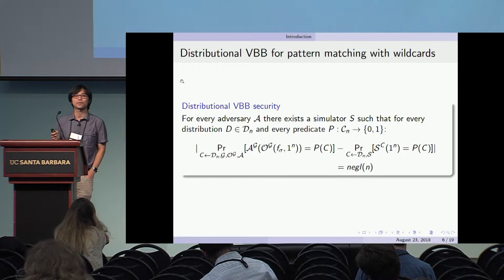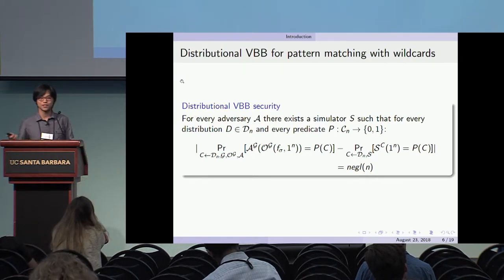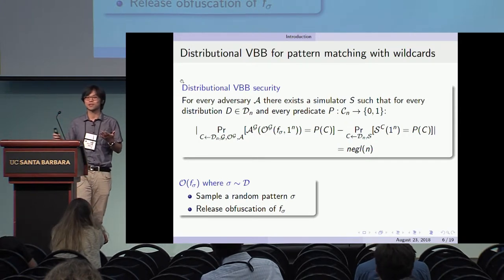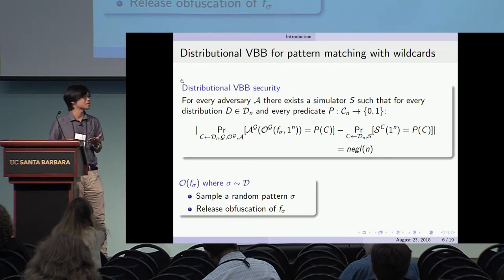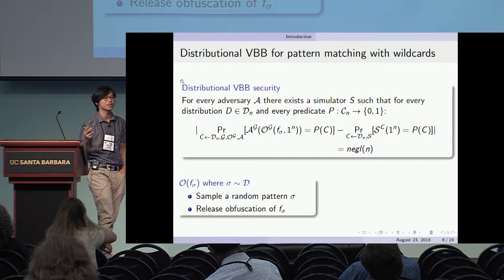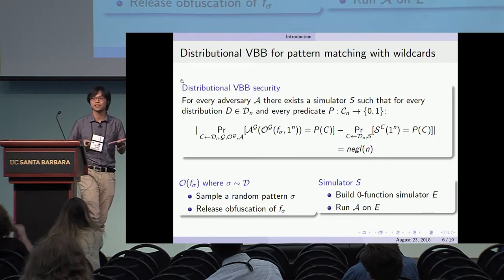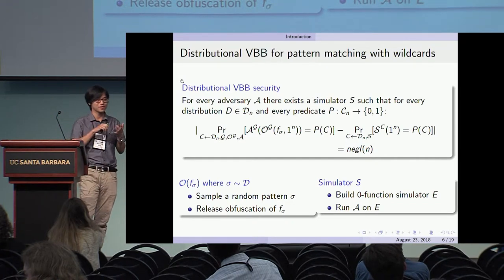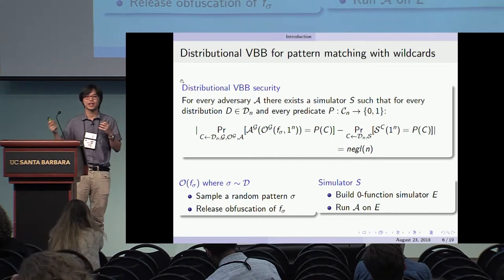The definition of security we're going to use is distributional VBB. VBB was for fixing any function and then obfuscating it; here instead, the function itself is allowed to be sampled. For our function class, the pattern sigma is sampled from some distribution over length-n strings. We then have a joint distribution over both the sampled function and the obfuscator's randomness. We want to show that with high probability over this joint distribution, the whole thing can be simulated — we construct an explicit simulator that runs the adversary's algorithm on something representing the zero function, so any adversarial algorithm should behave as if the function always outputs zero and has no accepting input.